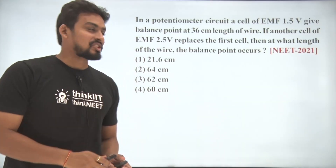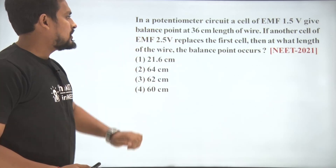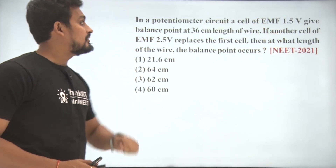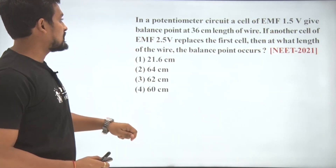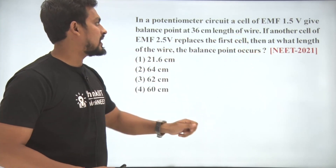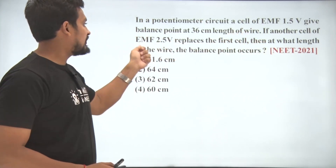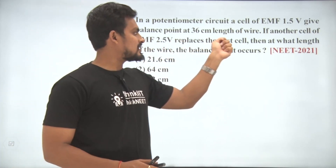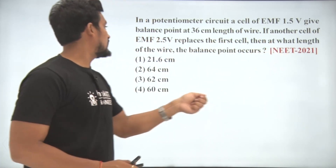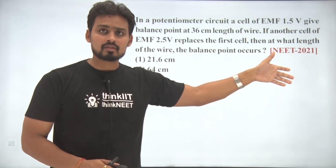In a potentiometer circuit, a cell of EMF 1.5 volt gives a balance point at 36 centimeter length of the wire. If another cell of EMF 2.5 volt replaces the first cell, then at what length of the wire does the balance point occur?